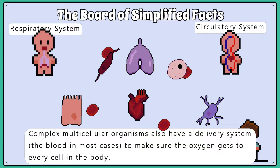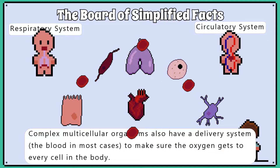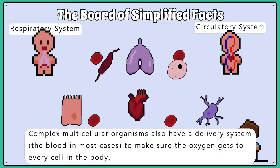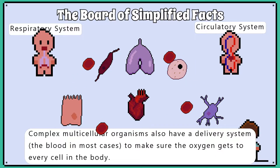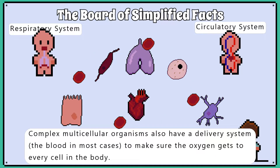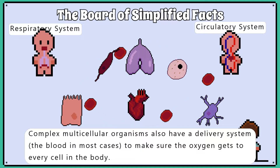Complex multicellular organisms also have a delivery system — the blood in most cases — to make sure the oxygen gets to every cell in the body.